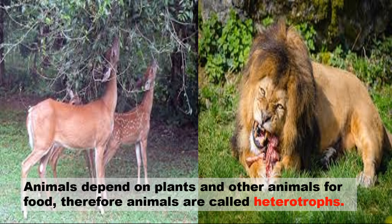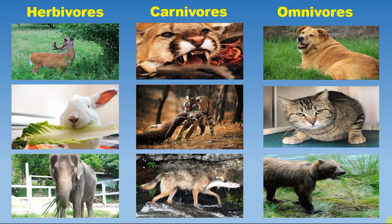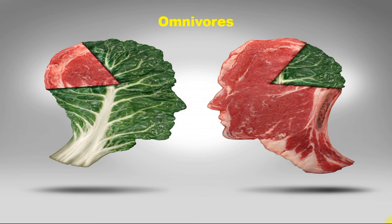Animals are called heterotrophs — 'heteros' means 'others.' Animals do not prepare their own food; they depend on other animals and plants. Not all animals eat the same type of food. Animals that eat only plants and plant products are called herbivores — examples are rabbit and elephant. Animals that eat other animals are called carnivores — examples are lion and tiger. Animals that eat both plants and animals are called omnivores — examples are dog, cat, bear, and even human beings. All living beings require food for survival, whereas non-living beings do not require food.